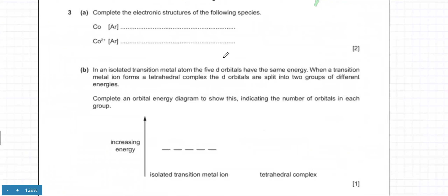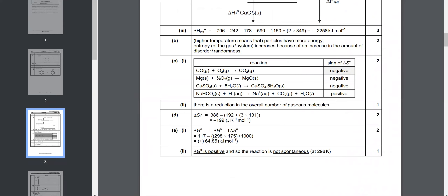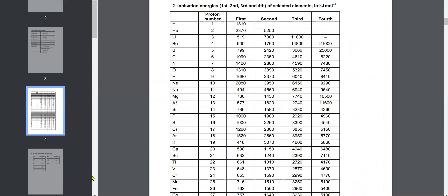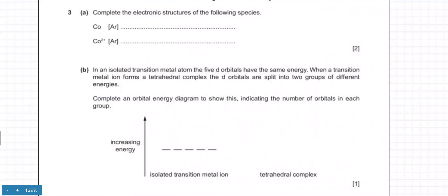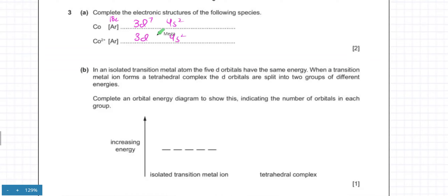The next part is about transition metals. You're asked to write the electronic structure of cobalt (atomic number 27). Up to argon you have 18 electrons; after argon you have 3d and 4s. The 4s fills first with 2 electrons (giving 20), then 7 electrons in the 3d sub-shell. When Co²⁺ is formed, electrons are lost from the outermost shell, so the 4s electrons go first.